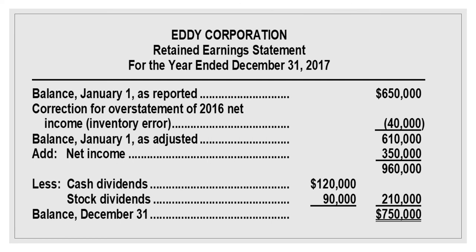E Corporation — Retained Earnings Statement for the year ended December 31, 2017: Balance at January 1 as reported: $650,000. Less correction of overstatement of 2016 net income (inventory error): $40,000. Adjusted balance: $610,000. Plus net income: $350,000. Subtotal: $960,000. Less cash dividends $120,000 and stock dividends $90,000 — total dividends $210,000. Ending balance on December 31: $750,000.